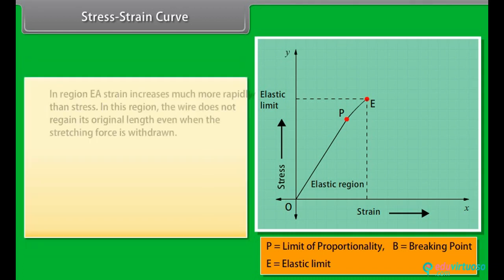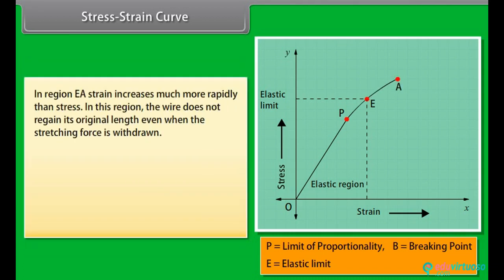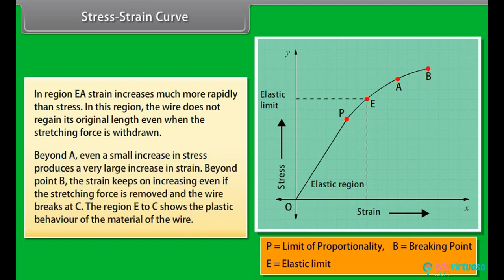In region EA, strain increases much more rapidly than stress. In this region, the wire does not regain its original length even when the stretching force is withdrawn. Beyond A, even a small increase in stress produces a very large increase in strain. Beyond point B, the strain keeps on increasing even if the stretching force is removed, and the wire breaks at C. The region E to C shows the plastic behavior of the material of the wire.